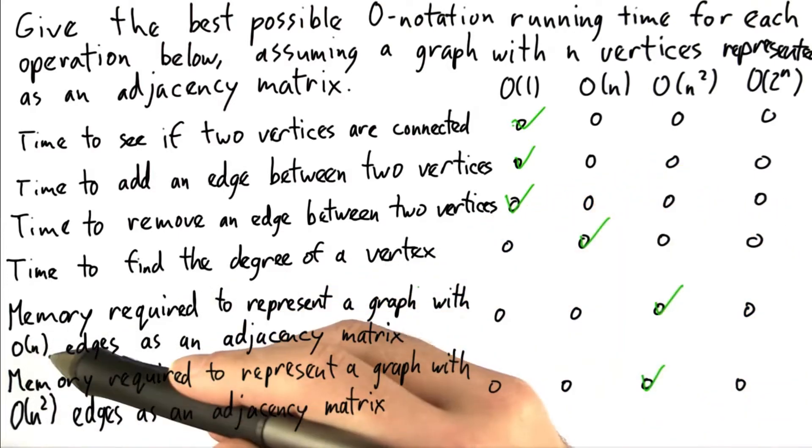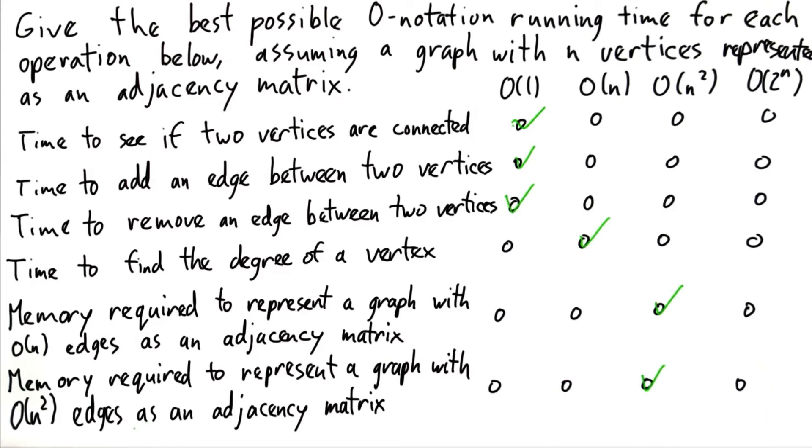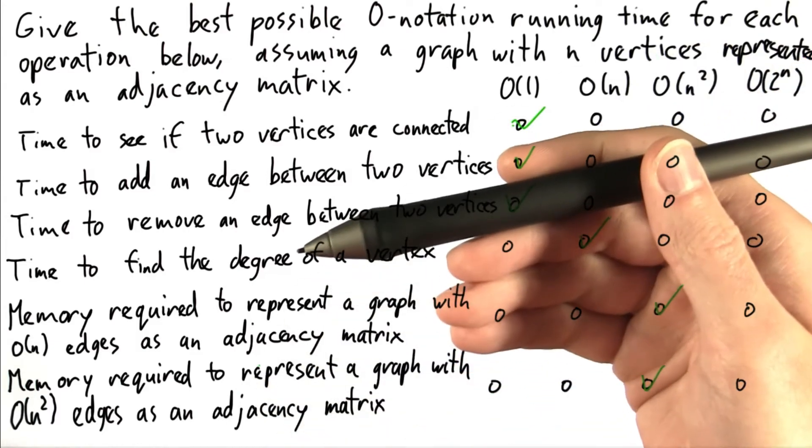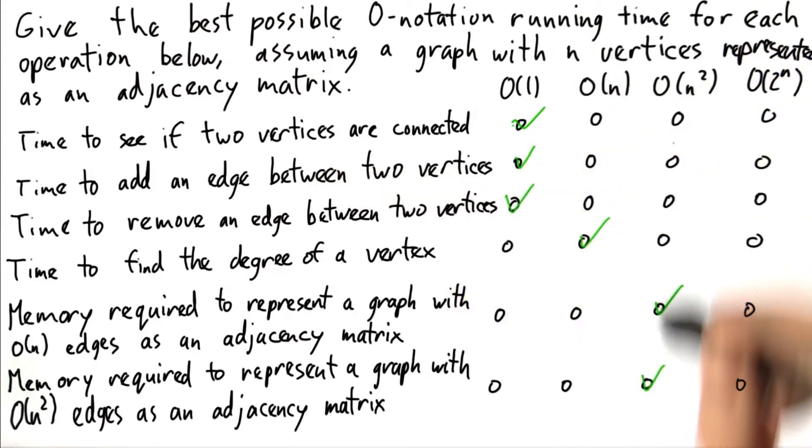The memory required to represent a graph with order of n edges as an adjacency matrix and order of n squared edges as an adjacency matrix—this is a bit of a trick question. If we have n vertices, then we have an n by n matrix, which is n squared total elements. So we're going to need n squared memory slots to put each of those elements in.